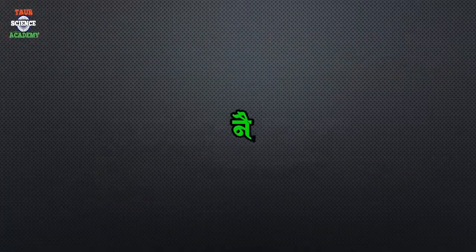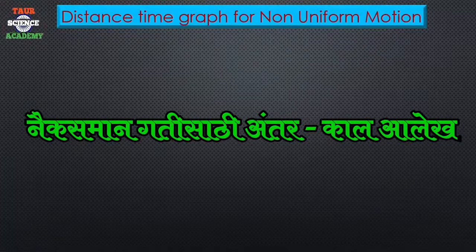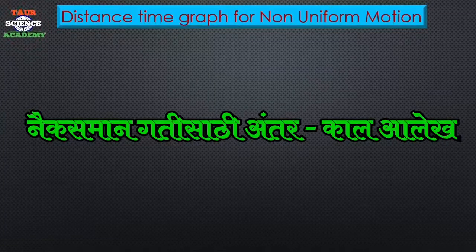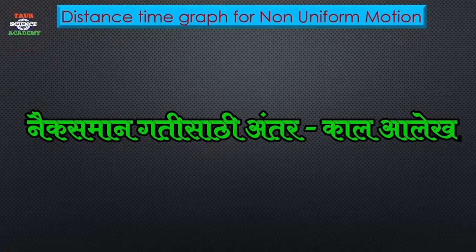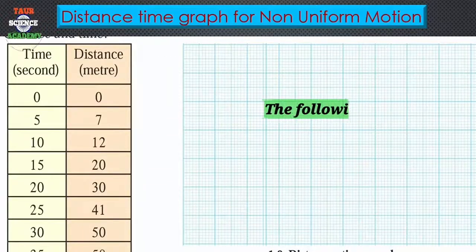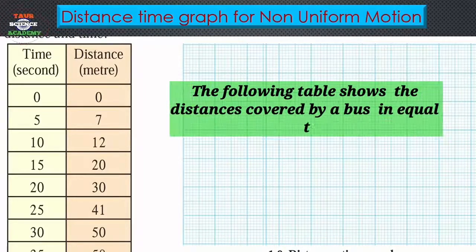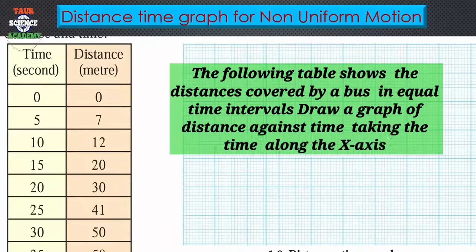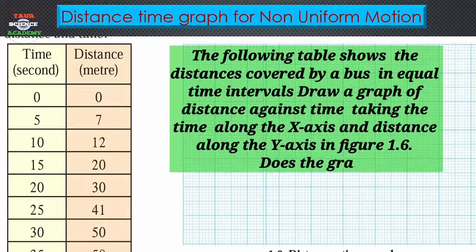Now the next graph will be the Distance-Time Graph for Non-Uniform Motion. The previous graph was for uniform motion; here it is for non-uniform motion. As we learned in the previous video, in non-uniform motion, unequal distances are covered in fixed time intervals. For this, the example given is a bus — page number 6 has the chart and graph. The problem says: the following table shows the distance covered by a bus.